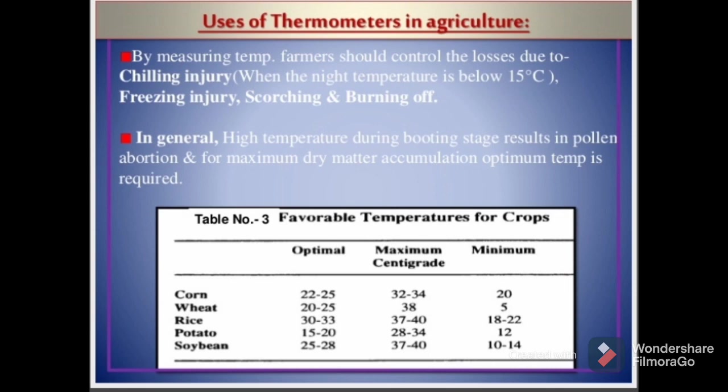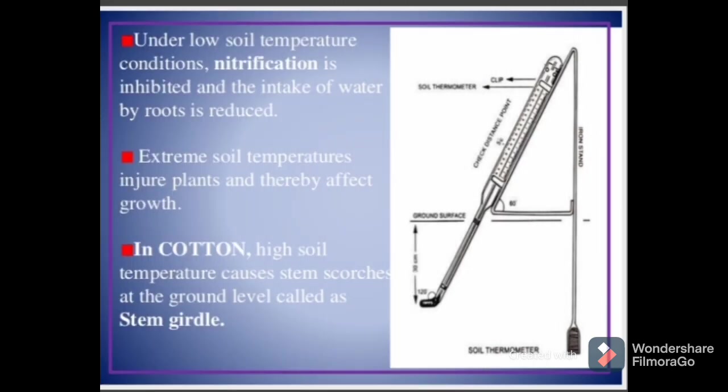Under low soil temperature conditions, nitrification is inhibited and the intake of water by roots is reduced. Extreme soil temperatures injure plants and thereby affect root development. In cotton, high soil temperature causes stem scorches at the ground level, called stem girdle.